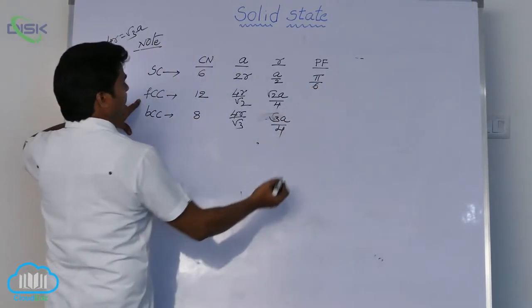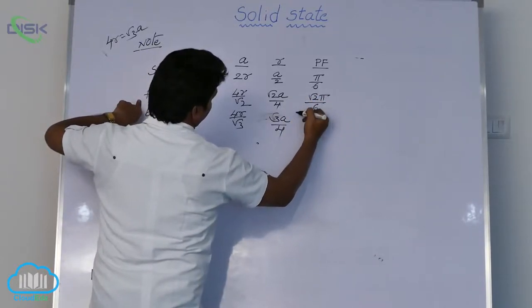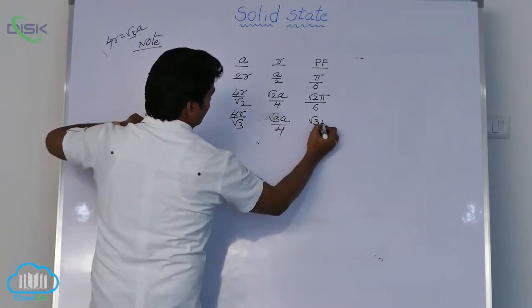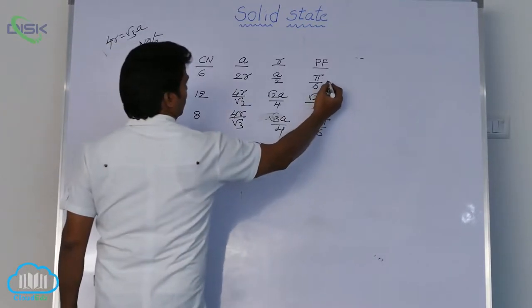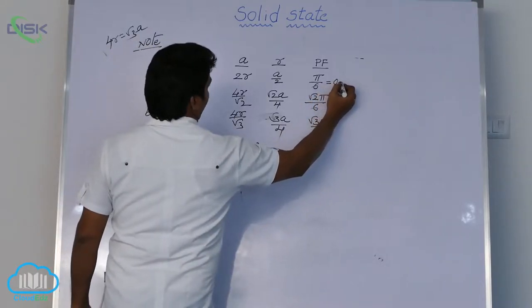In FCC, it is √2π by 6. And in BCC, it is √3π by 8. These are the values. π by 6 value, packing fraction nearly 0.524.